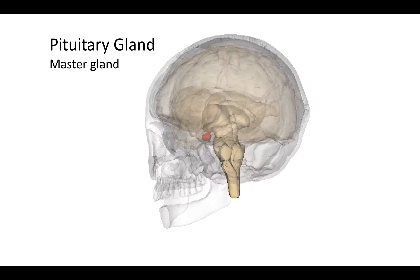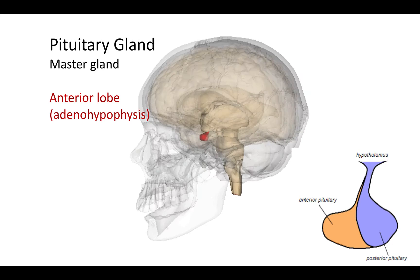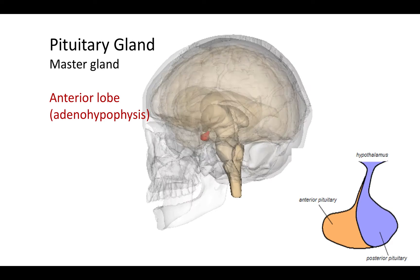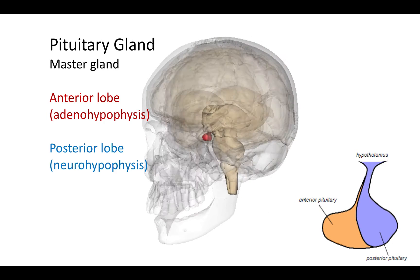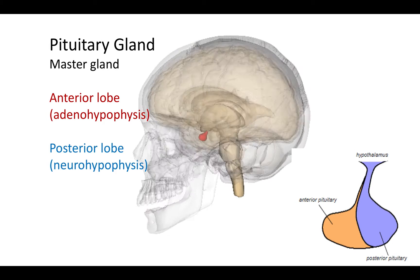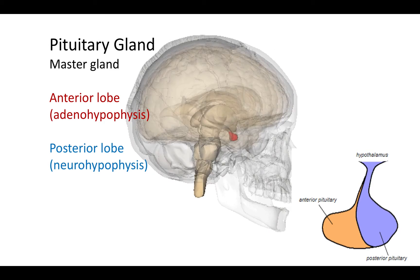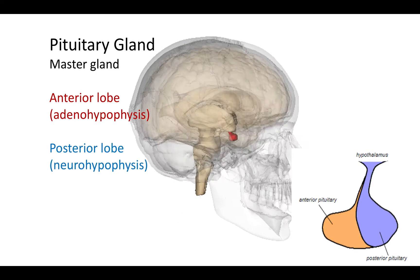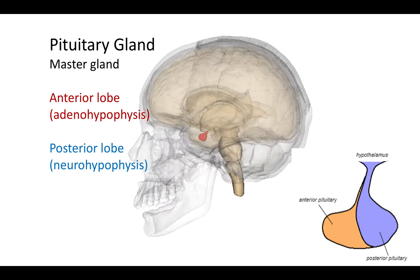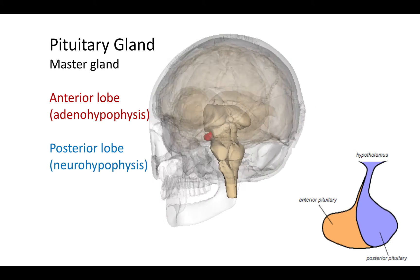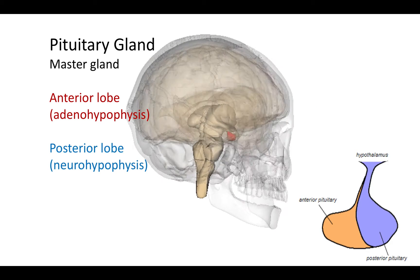There are two lobes: an anterior lobe, also called the adenohypophysis, and a posterior lobe, also called the neurohypophysis. You can see in the picture that it's actually an extension of the hypothalamus, and neurons in the hypothalamus extend down into the posterior pituitary.